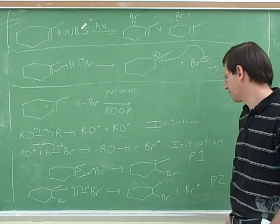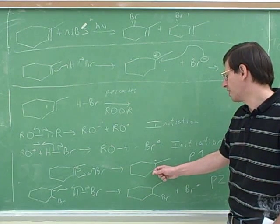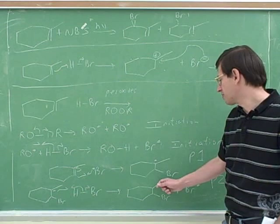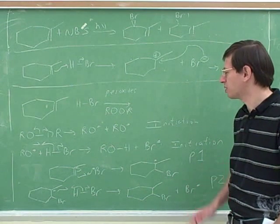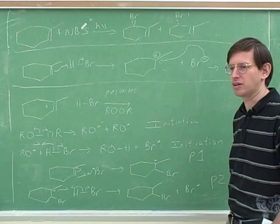Actually, I think you might get four products, because this bromine can be under a wedge or a dash, and this methyl group can end up under a wedge or a dash. I think that would give you four products, but that might be more than your instructor would expect you to go through.